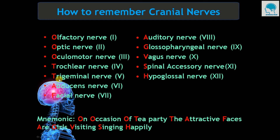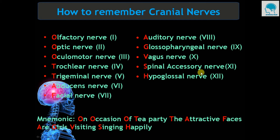The next T stands for trigeminal nerve, A stands for abducens nerve, F stands for facial nerve, A stands for auditory or vestibulocochlear nerve, G stands for glossopharyngeal nerve, V stands for vagus nerve, S stands for spinal accessory nerve, and H stands for hypoglossal nerve.